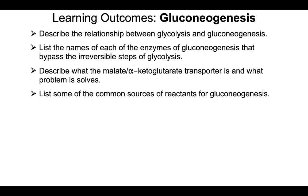Review this video and the other videos, and be able to describe the relationship between glycolysis and gluconeogenesis, list the names of each of the enzymes of gluconeogenesis that bypass the irreversible steps of glycolysis, describe what the malate alpha-ketoglutarate transporter is and what problem it solves, and list some of the common sources of reactants for gluconeogenesis.